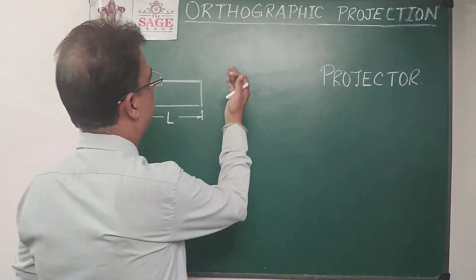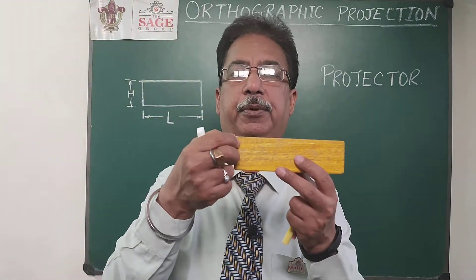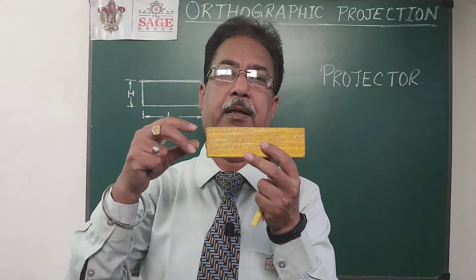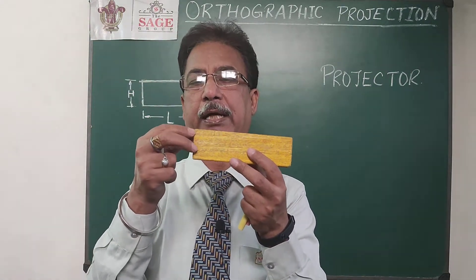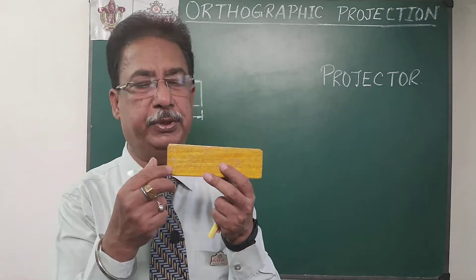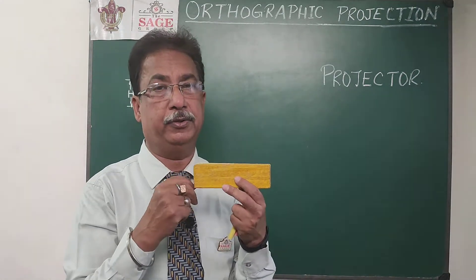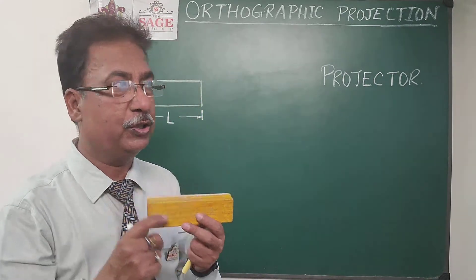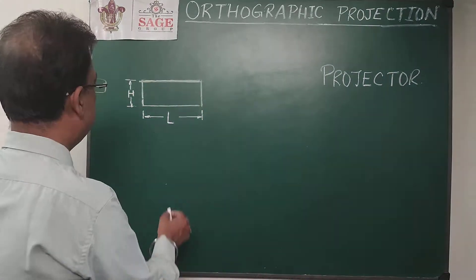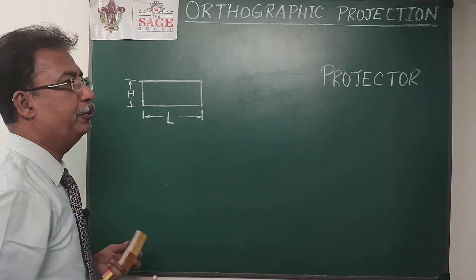Orthographic projection is the type of projection when the projectors are perpendicular to the plane. Right now, I have actually drawn the orthographic projection of this object — I have taken these projectors perpendicular to the plane. So this is orthographic projection. The limitation is that with the help of a single projection, we cannot get the complete information about the object.